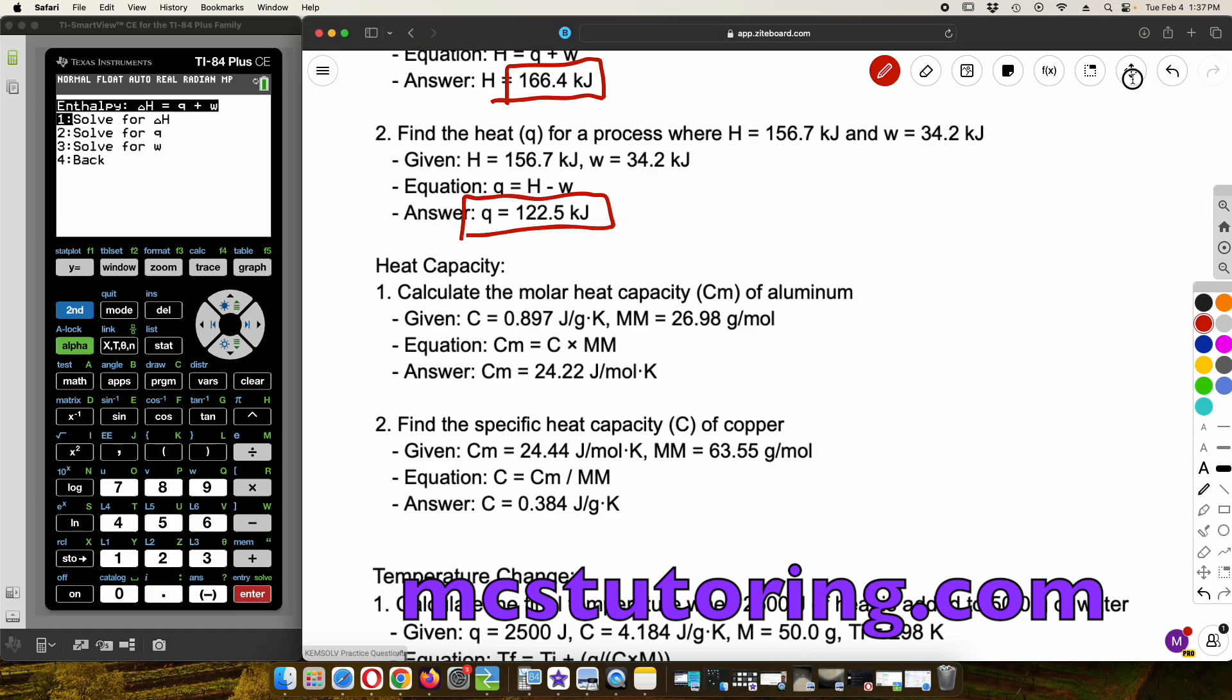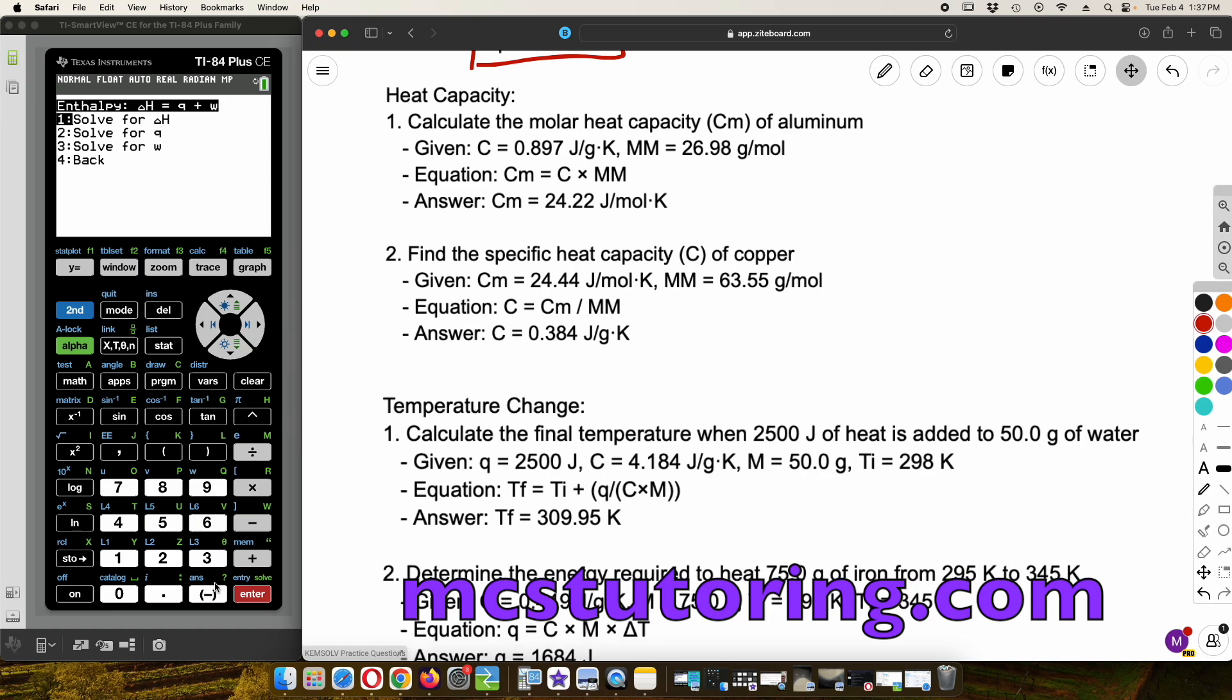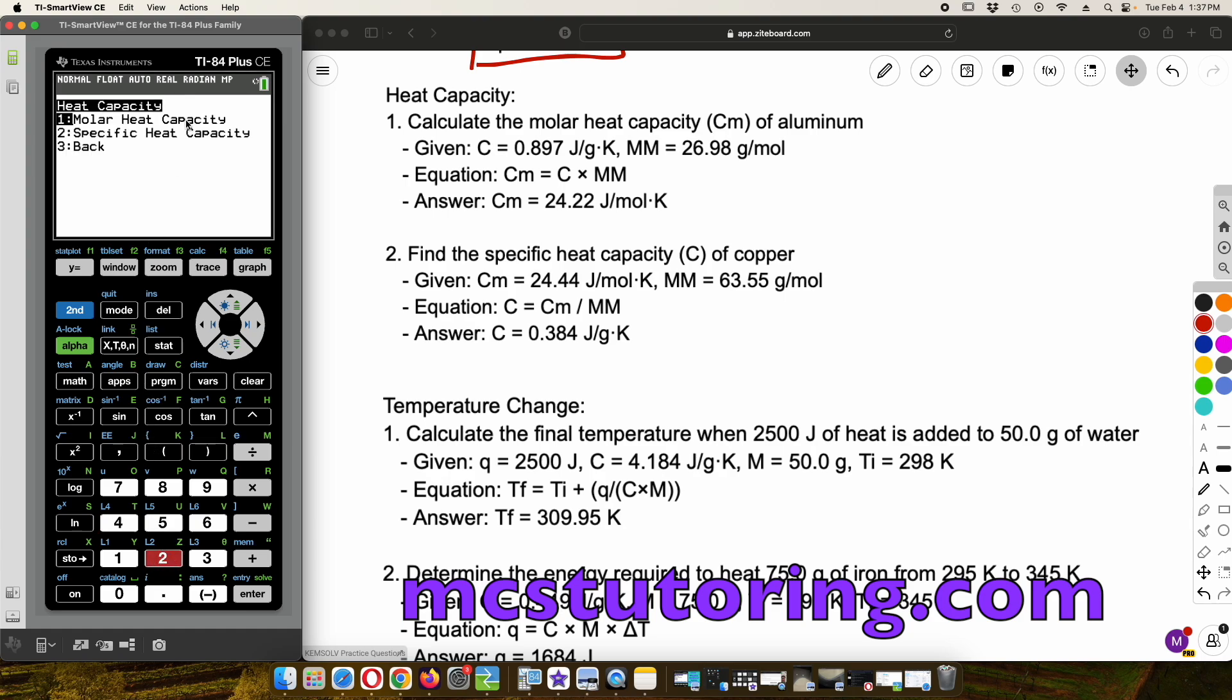And then we're going to go to heat capacity. So we're going to scroll down a little bit. And then we're going to use the back command there. And then we're now going to go on heat capacity, which is option two. And then do we want the molar heat capacity or the specific heat capacity? In this case, we want the molar heat capacity. And then it shows the formula here. C equals C times MM.